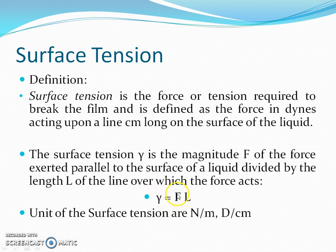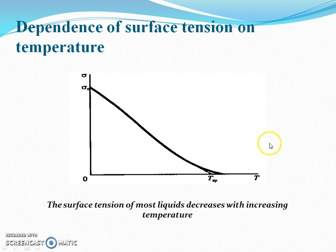Lambda is the surface tension equal to F, the force, divided by L, the length of the surface. The units of surface tension are Newton per meter or dynes per centimeter.